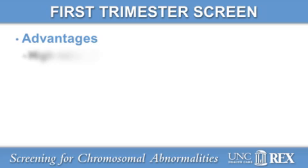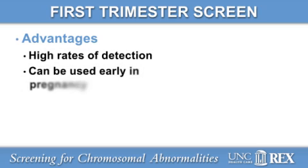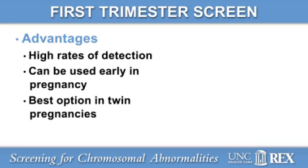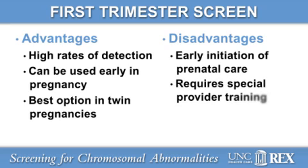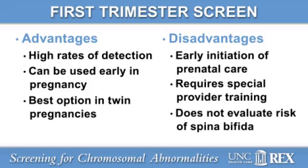The first trimester screen has several advantages. It has high rates of detection for Down syndrome, it can be used very early in a pregnancy, and it's the best screening option in twin pregnancies. Its disadvantages include the need for early initiation of prenatal care. The test itself requires special provider training and evaluation, which limits its availability. And unfortunately, it does not evaluate the risk of spina bifida.